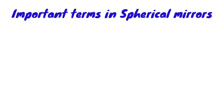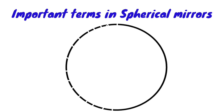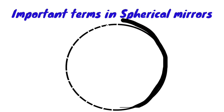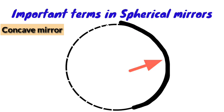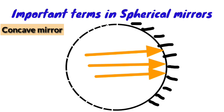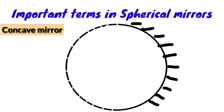Back to spherical mirrors. When we consider a concave or convex mirror, we need to concentrate on this as part of a sphere. We always place the mirror as part of a sphere because we have different curves in the mirror. This side is the non-reflecting surface, and we can create the light-forward reflecting surface. The center of this sphere is called the center of curvature.